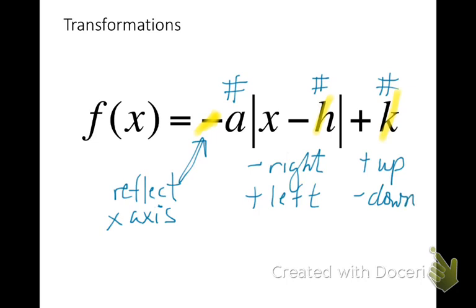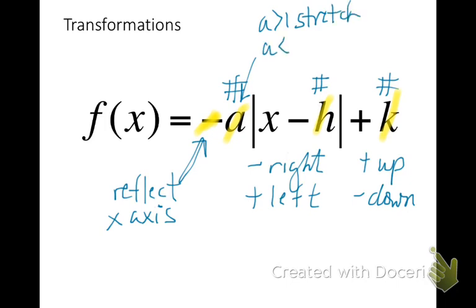Sometimes these transformations happen one at a time; sometimes they happen all at once. Now there's one more — the a value. We think of a and the negative as two separate things. If the value of a, ignoring the negative, is greater than 1, that is going to stretch the graph — make it skinnier or steeper if it's a line. If the a value is less than 1 but not less than 0, just a fractional amount, then that's going to be a compression — it will compress the graph, make it wider or flatter.